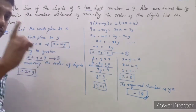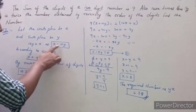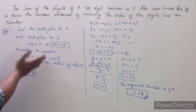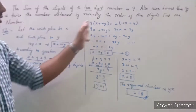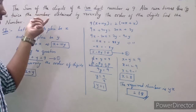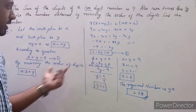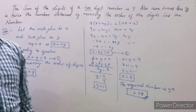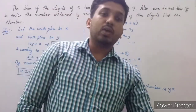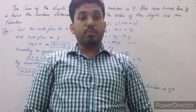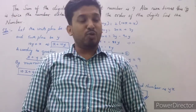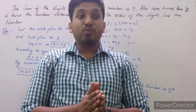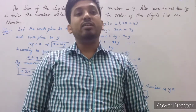So in this type of problem, focus on the key forms: x + 10y for the original number and 10x + y for the reversed number. According to the conditions given, form the equations and solve for x and y to find the required digit. This way you can solve any word problem based on digit-based linear equations.